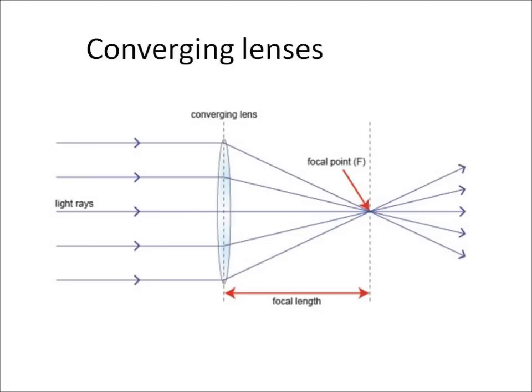Lenses are objects, normally made out of plastic or glass, that make light refract. As you can see here, what we have is a converging lens, or a convex lens, which makes all the light rays come together at a focal point, which is marked by the letter F. The distance between the focal point and the lens is called the focal length.